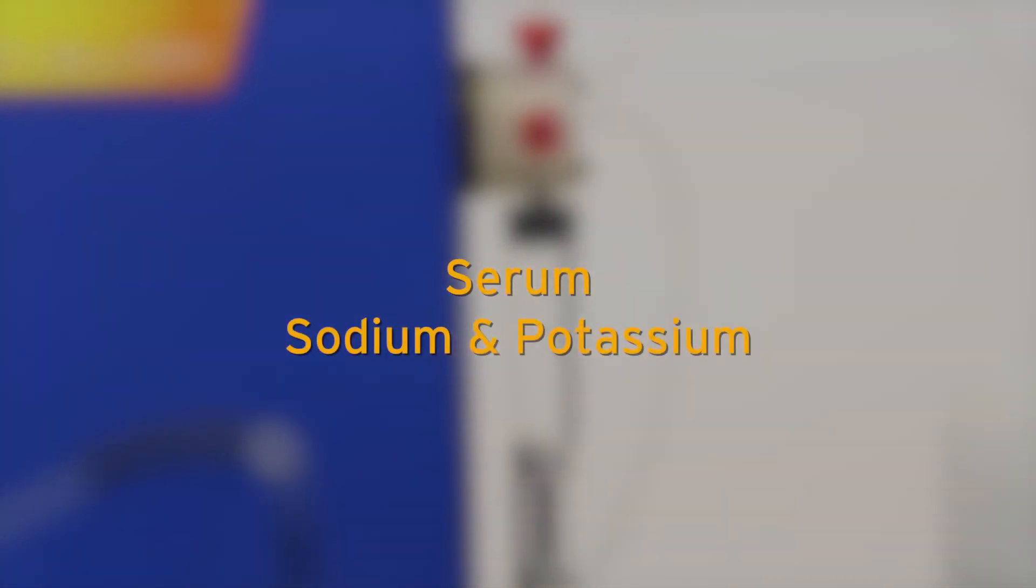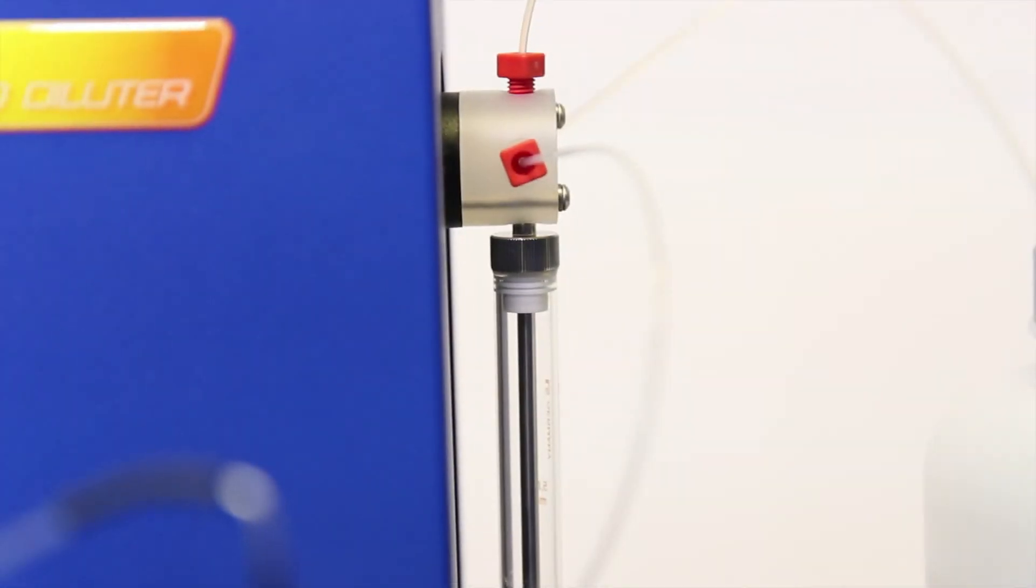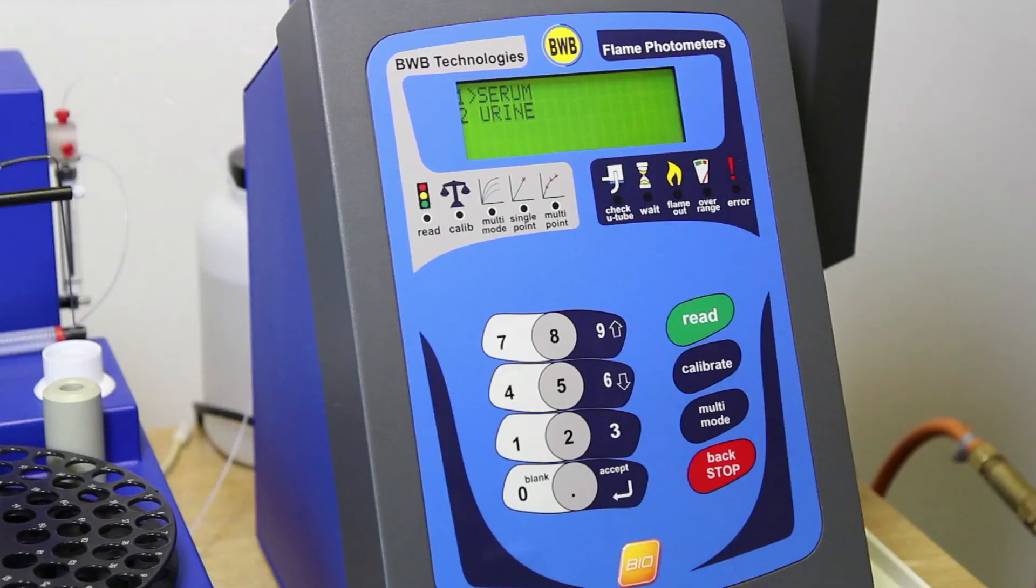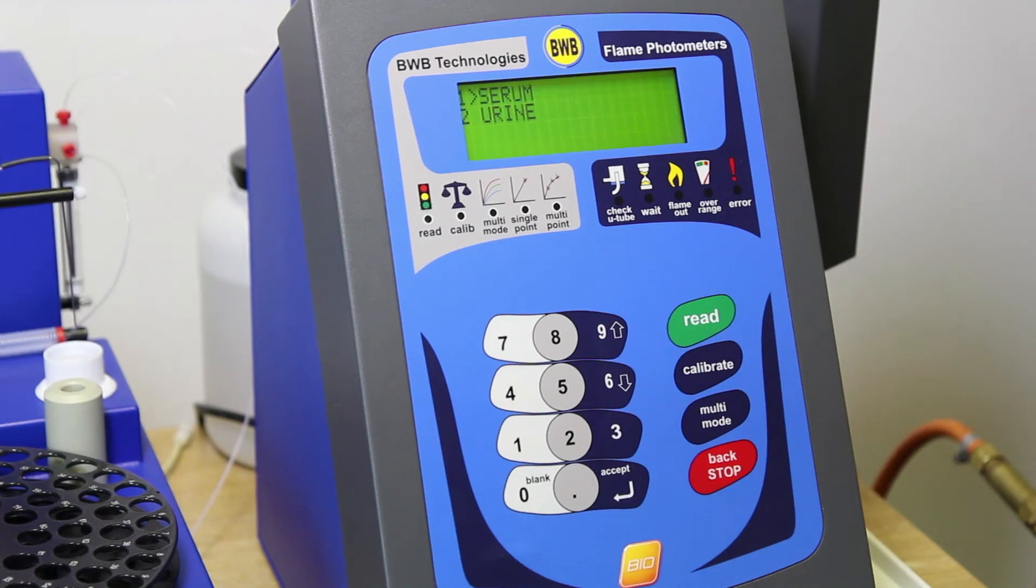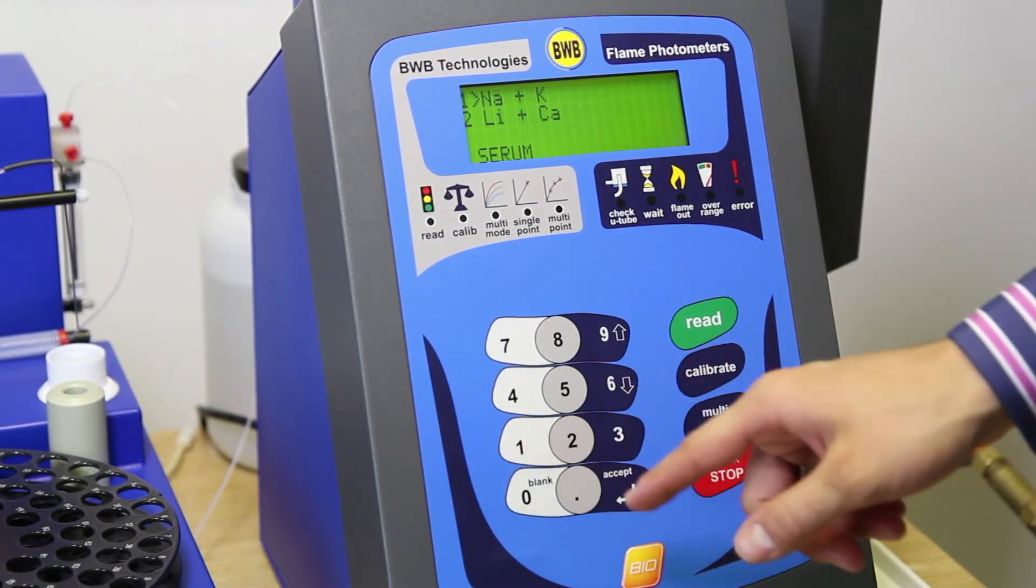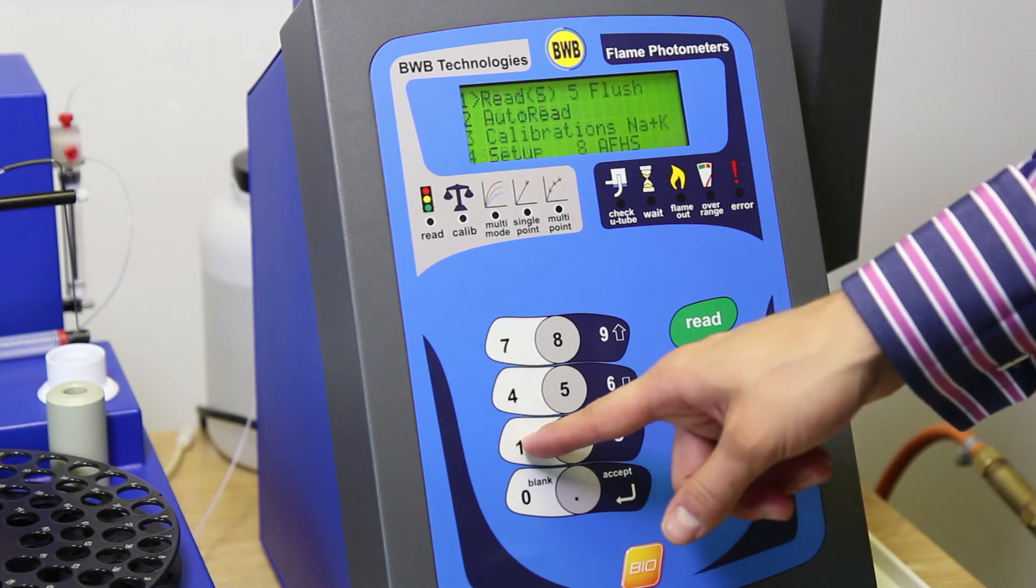For the purposes of this tutorial, we will be calibrating for serum with sodium and potassium as the ions of interest. From the BWB Bio main menu, select Serum and press Accept. Now select Sodium Potassium.